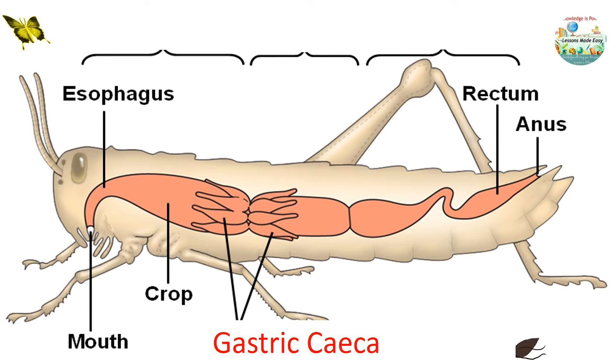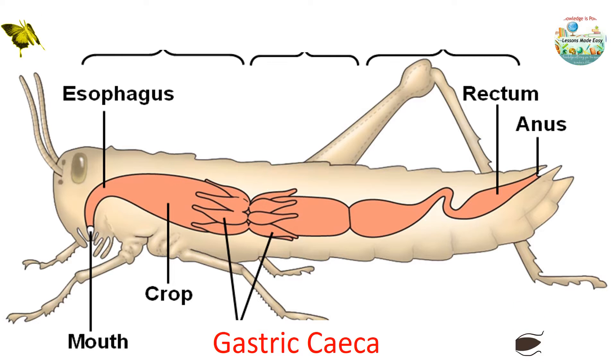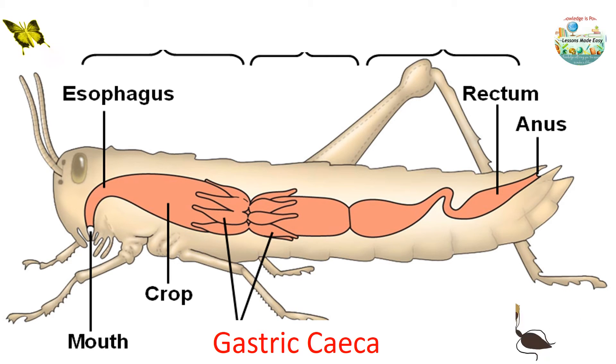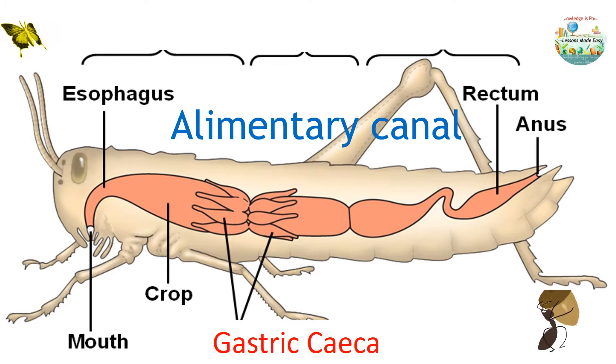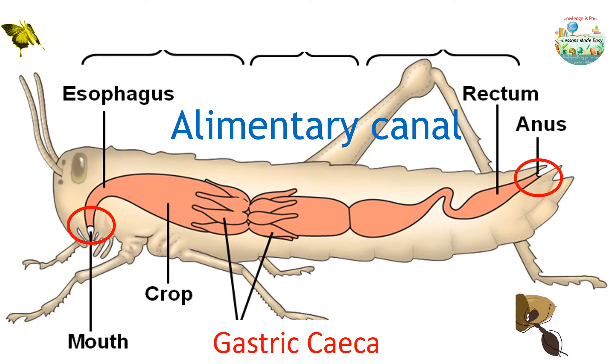Just like any other animals, insects have a complete digestive tract, which consists of a single tube known as the alimentary canal, that runs from the mouth to the anus.